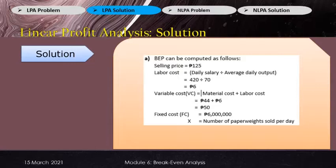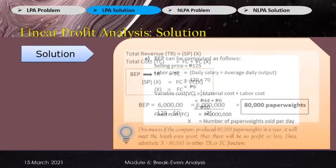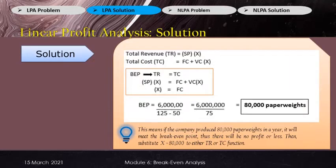So 44 pesos plus 6 pesos equals 50 pesos, which is our variable cost. As mentioned, total revenue equals total cost at break-even. So 6 million divided by (125 minus 50), which is 125 selling price minus 50 variable cost, equals 75 pesos — our contribution margin. Then we divide the fixed cost by the CMR: 6 million divided by 75 gives us 80,000 paperweights as our break-even point.